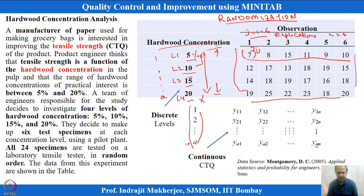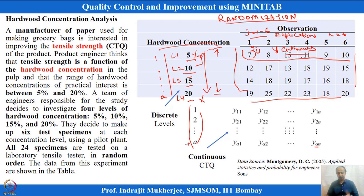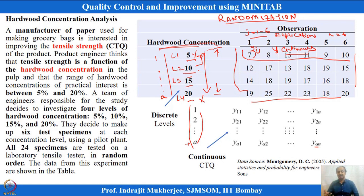An important assumption in ANOVA is that the factor levels are discrete and the response y is continuous. This is a primary assumption — y must be continuous for one-way ANOVA. One-way ANOVA involves one factor at more than two levels, and since the levels are in the experimenter's control, the model used is called the fixed effects model.